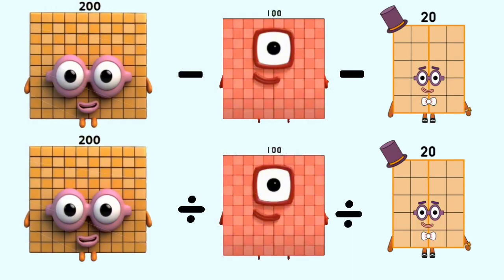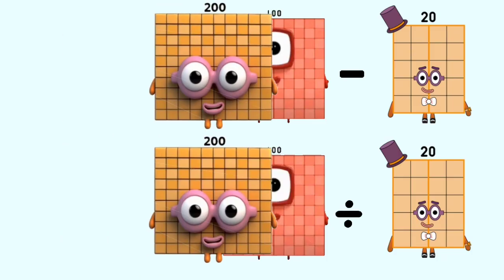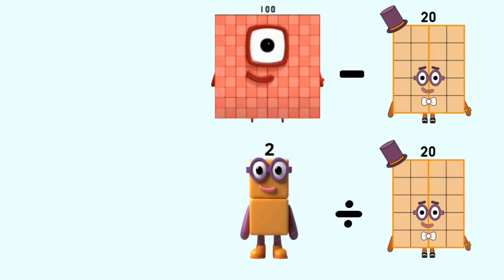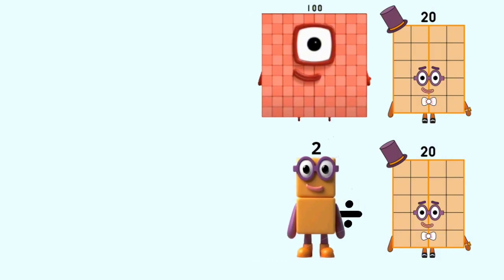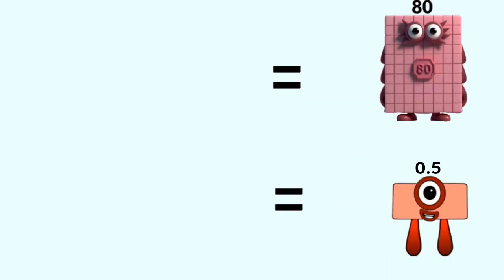Number blocks 200 minus 100 and divided by 100 equal 100 and 2. Number blocks 100 minus 20 and 2 divided by 20 equal 80 and 0.5.